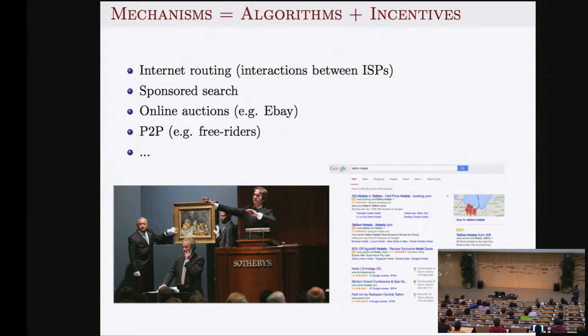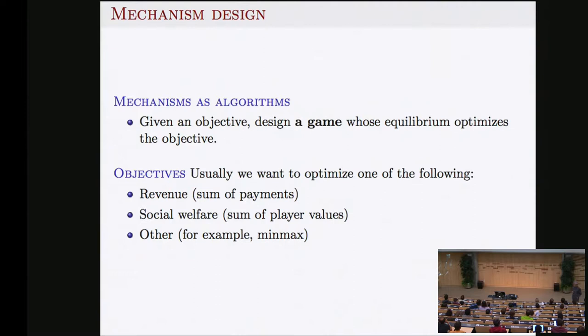I'm going to discuss sponsored search — the way search engines get their money — and auctions, which are the typical mechanism design example. eBay is based on auctions. There are also peer-to-peer networks with problems like free riders. Mechanisms are essentially algorithms with incentives — the incentives may be money or something else.